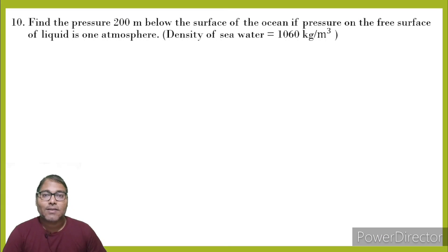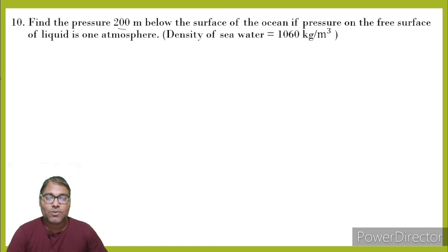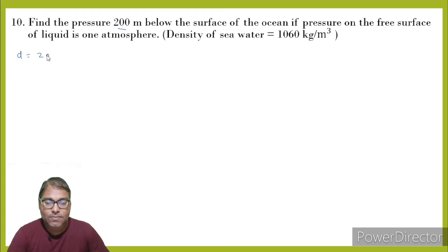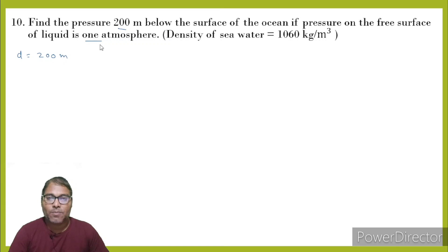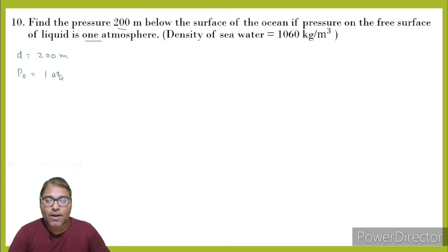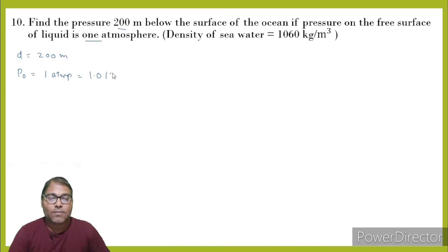Start with question number 10: Find the pressure 200 meters below the surface of the ocean, if the pressure on the free surface of liquid is 1 atmosphere. So depth D is 200 meters, and free surface pressure P0 is 1 atmosphere, which is 1.013 into 10 to the power 5 Pascal.